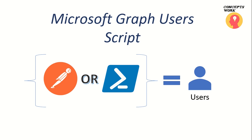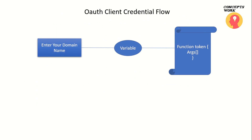Welcome back to our Microsoft Graph series. In this video we are going to talk about the script discussed in our Microsoft Graph user video. The first fundamental to address is that we are going to use OAuth 2.0 client credential flow. As covered in the last video, the script uses client ID, client secret, and explicitly granted permissions to request an access token.